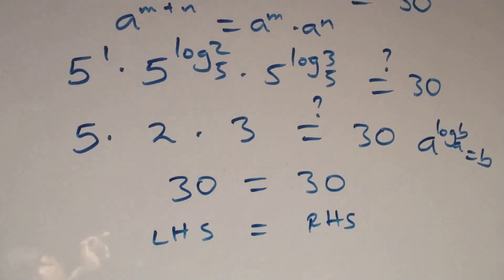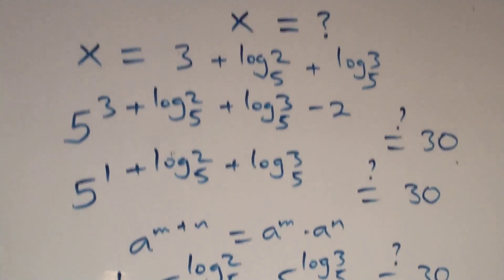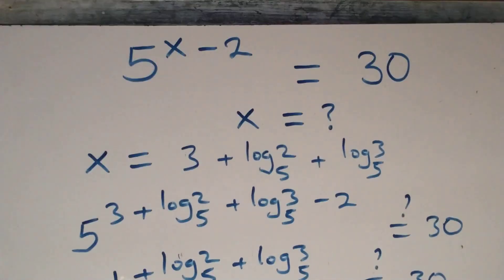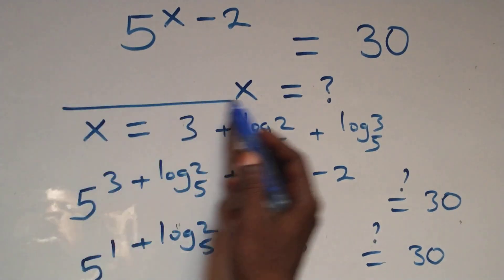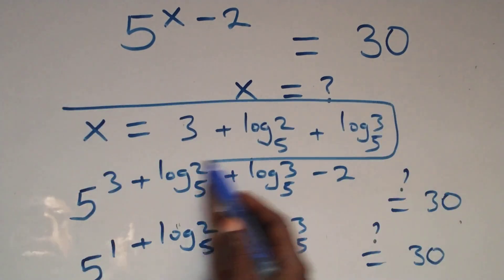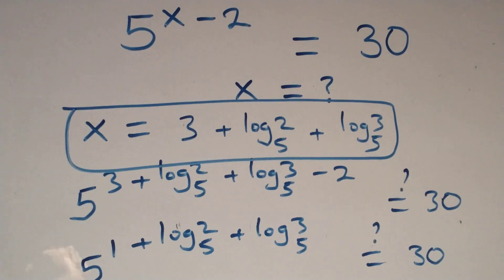And therefore, we conclude that x equals to 3 plus log₅2 plus log₅3. That is the solution to this given problem. Thank you for watching. Don't forget to subscribe for more videos. Turn the notification bell on, share this video with a thumbs up, and put your comments. See you in the next class and bye for now.